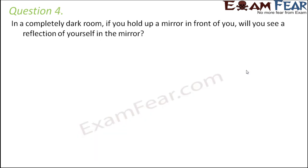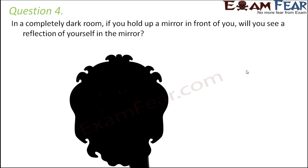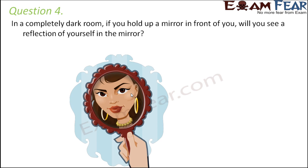Question number four: in a completely dark room, if you hold up a mirror in front of you, will you see a reflection of yourself? Of course not, because light is needed for reflection to take place. With no light, nothing falls on the mirror, so there is no bouncing back of light, no image formation, and therefore you will not see your reflection. Light is a must for reflection to take place.